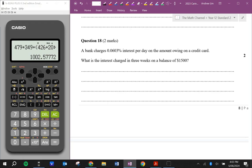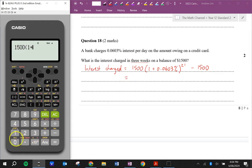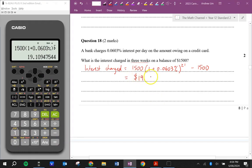The bank charges 0.0603% interest per day on the amount on the credit card. What is the interest charged in three weeks on a balance of $1,500? So the interest charged, we're going to take that $1,500. Because it's a credit card, always assume it's compound interest. So it's 1 plus 0.0603% per day and we want three weeks. So that's 21 days. But then we need to minus $1,500 to work out the interest charged. The interest charged is $19.11.